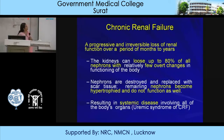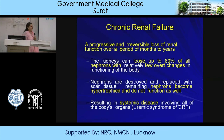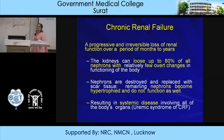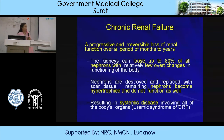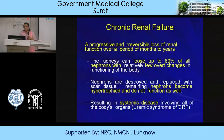Chronic renal failure is a progressive, irreversible loss of renal function over months to years. Even with 80% of tissue damaged, the kidney can still function because of its reserve capacity. However, nephrons are destroyed and replaced with scar tissue (nephrosclerosis). The remaining nephrons become hypertrophied and take over the function of the diseased nephrons. The resulting systemic disease is called the uremic syndrome of CRF.